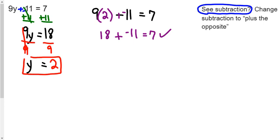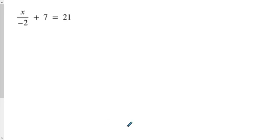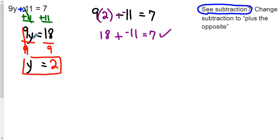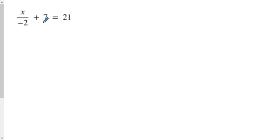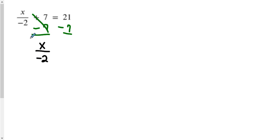This next problem usually frustrates people because they're not sure what to do, but think about what's happening: this is x divided by negative two. This is how we showed division in the previous problem — nine times y, how do we get rid of it? Divide by nine. So we're showing division here, and that's what they're showing us here: x divided by negative two. So get rid of our add/subtract number first. Make sure you get that subtraction line right so it makes a uniform appearance — it's really important to show work properly.